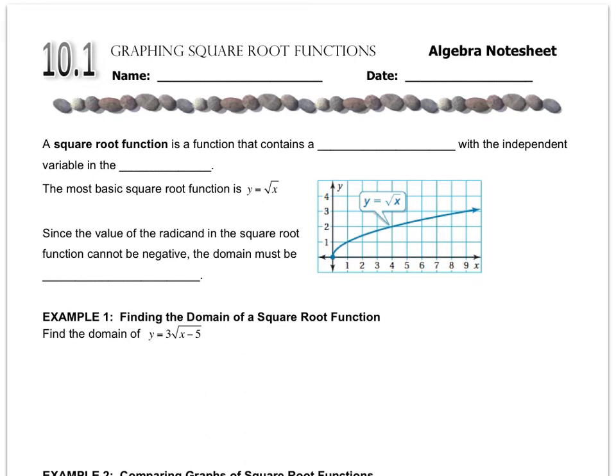In chapter 10 we focus on a lot of concepts with square roots, one of which is how to graph a square root function. A square root function is a function that obviously contains a square root, but one important concept is that the independent variable, meaning the x value, is in the radicand.